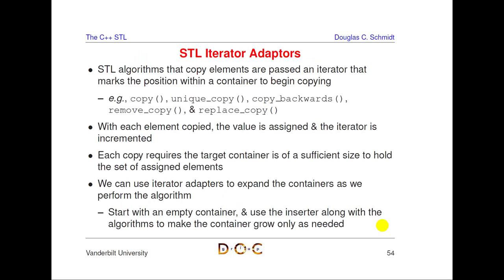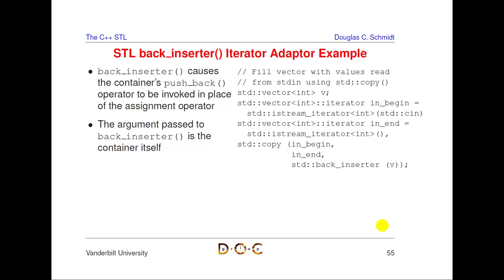Next topic: iterator adapters. These take things that are not iterators and make them look like iterators — a classic adapter. They're used with algorithms like copy, remove, and replace. You can adapt containers, or adapt iostreams for files, standard input/output. A key benefit: iterator adapters can automatically grow the underlying container without you knowing sizes in advance — that's what back_inserter does.